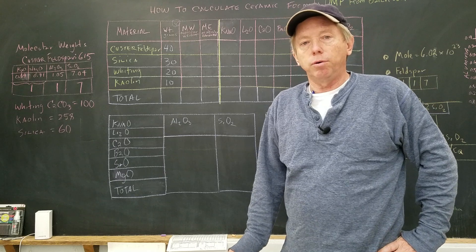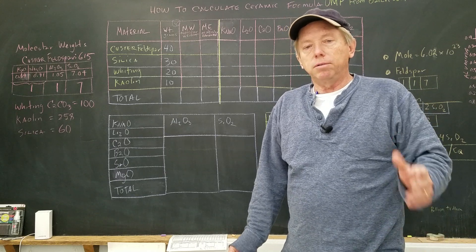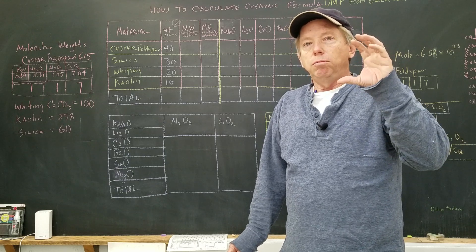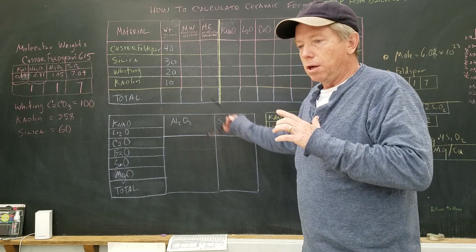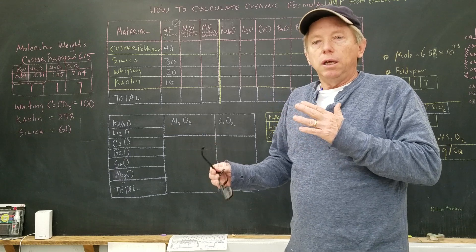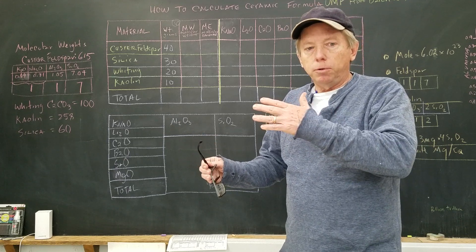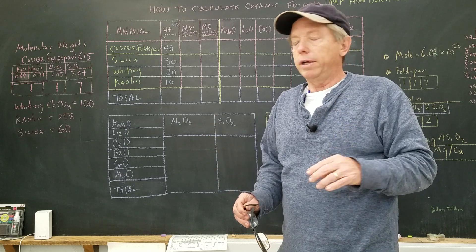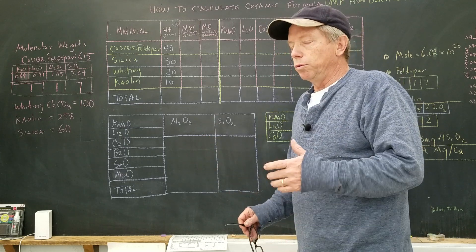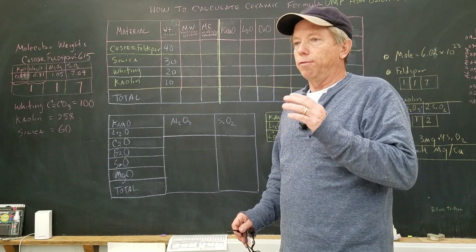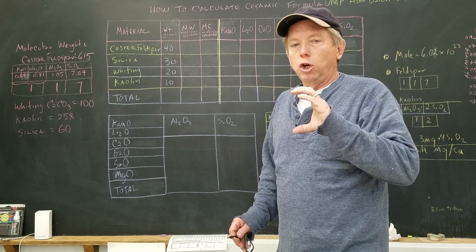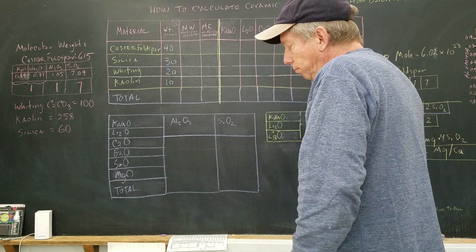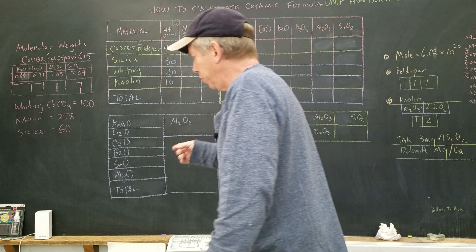The reason I think this is important before we start talking about glaze software is that if you know the way these numbers are generated in the software, it'll help you to manipulate your glazes better. We're creating a unity molecular formula, so all the fluxes will add up to one.